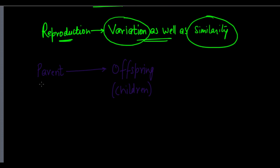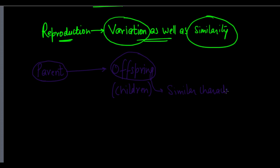When this parent produces the offspring, there are some things in the offspring which are similar to that of the parent — similar characteristics to the parent. For example, we as children have some features such as our facial features — the way our face is — and some of these things are very similar to that of our parents. That is why we say reproduction leads to some degree of similarity.